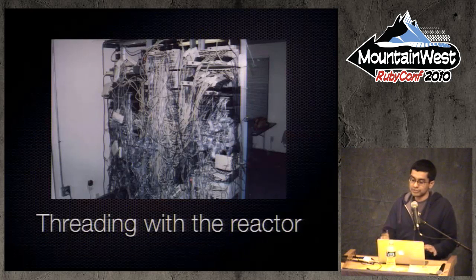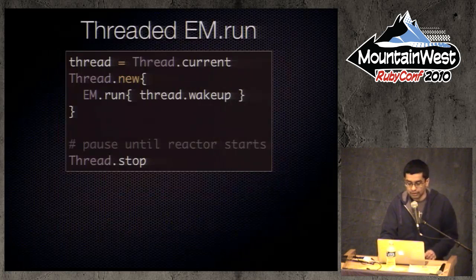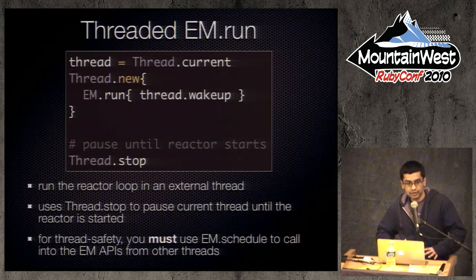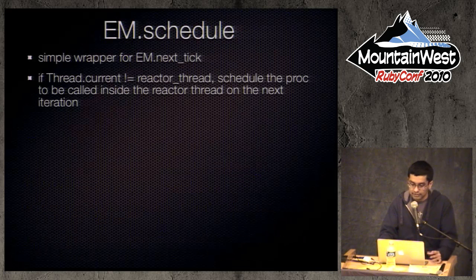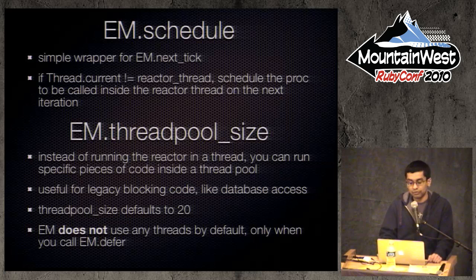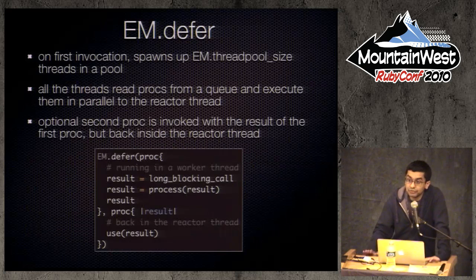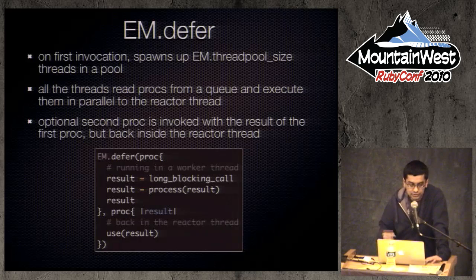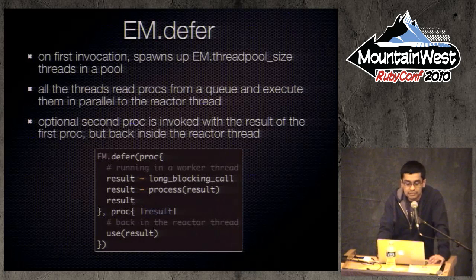We touched on threading briefly. You can run Event Machine in an external thread — there's a common trick that pauses the current thread until the reactor is up and running. There's EM.schedule, which is a simple wrapper around next_tick and ensures thread safety. By default, Event Machine does not use threads. If you want to use threads, you invoke EM.defer — you pass in a proc and instead of doing that work in the main loop, it runs in a thread pool whose size you can configure.